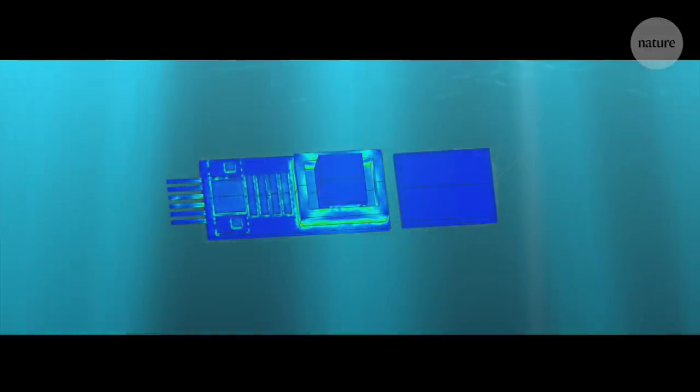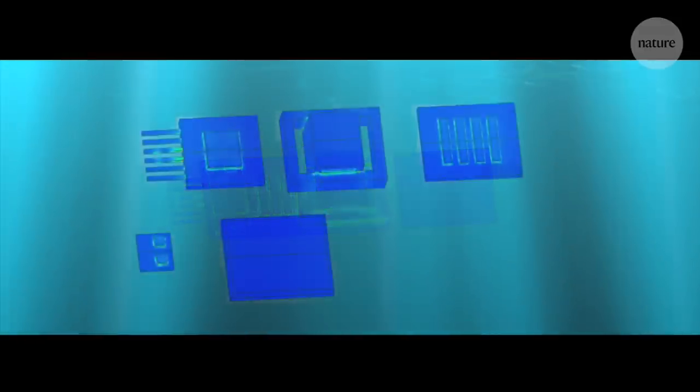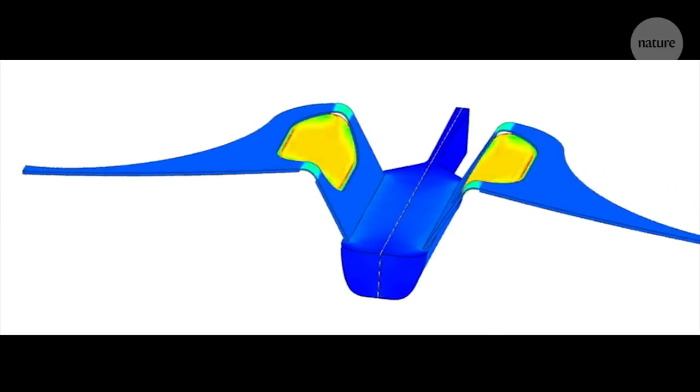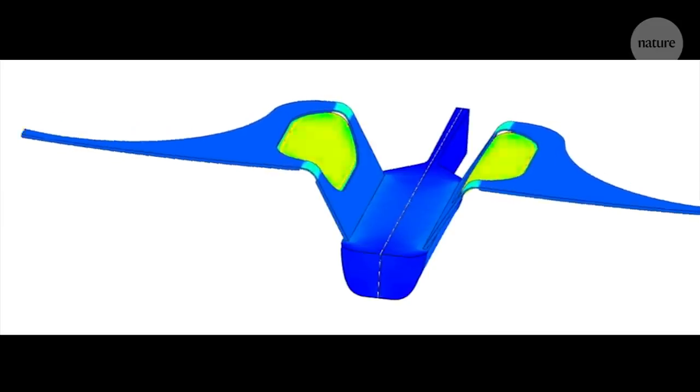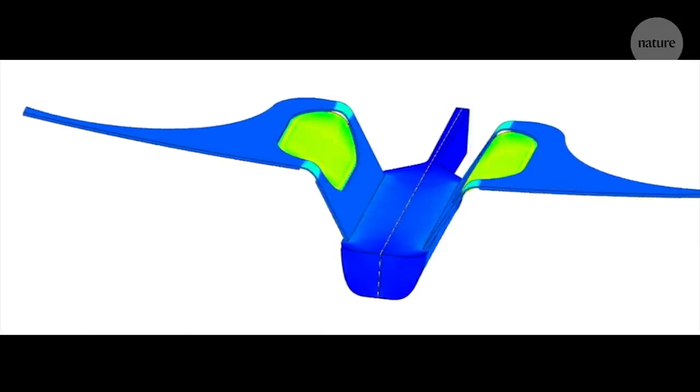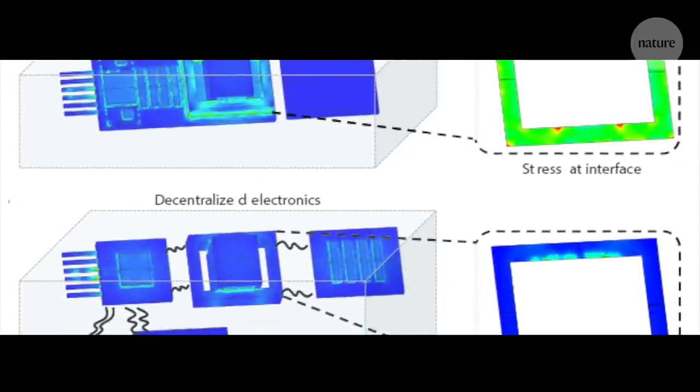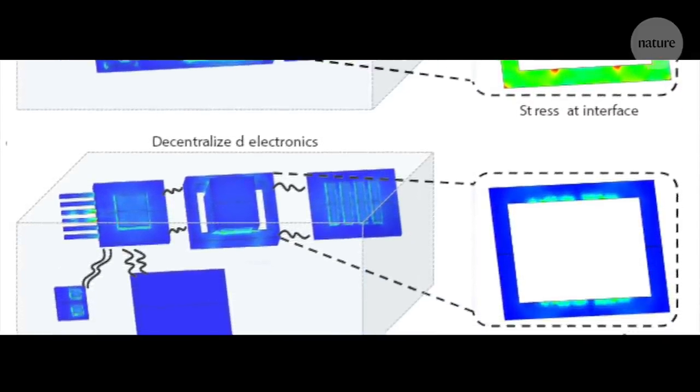They hypothesized that distributing the vulnerable electronics could also decrease the stress on each part. The team modeled the impacts of separating the battery and parts of the control architecture. And it seemed that this could indeed reduce the stress on the interfaces between the components. The next step was to build and test it.